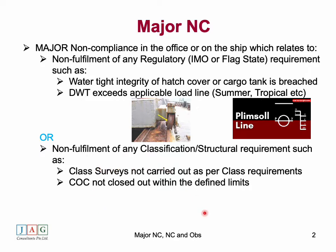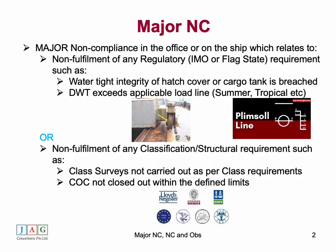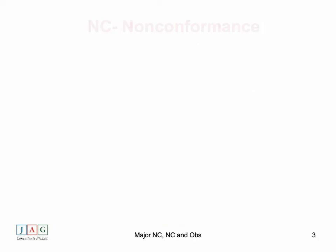A major non-conformity is also equal to a non-fulfillment of classification requirements, such as class surveys not carried out as per class requirements, or a condition of class not closed within the defined limits. That's a major non-conformity — the vessel can't proceed to sea until action is taken to mitigate the situation, or you need to downgrade the major NC into a non-conformity by taking appropriate action.